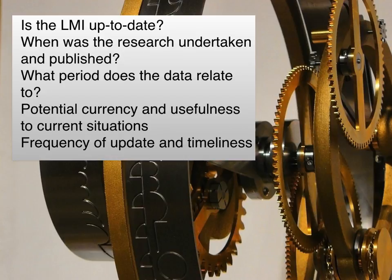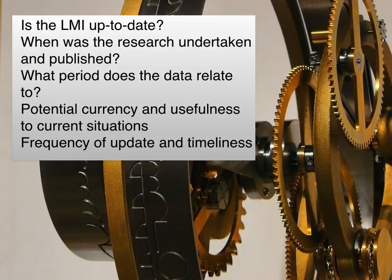Is the data up to date? The Census produces wonderful data, but it's only produced once every 10 years in the UK, and by the time it's published, it can be quite out of date. When was the research undertaken and published? What period does the data relate to? Is it useful for current situations? For example, computer occupations have changed a lot in the last 10 years, so data from 10 years ago may be well out of date. In other occupations — hairdressing probably hasn't changed a lot over the last 10 years. How frequently is the data updated, and how timely is it — how long does it take from updating to being published?